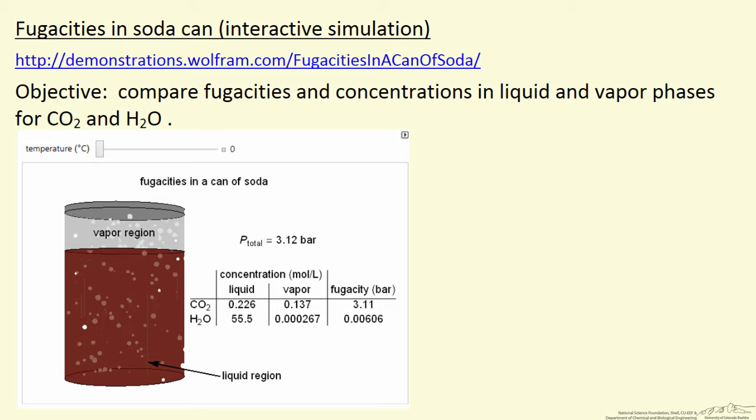One thing to keep in mind when we're talking about equilibrium between a liquid and a vapor: the criteria for equilibrium is that the fugacity for a given component is the same in each phase.